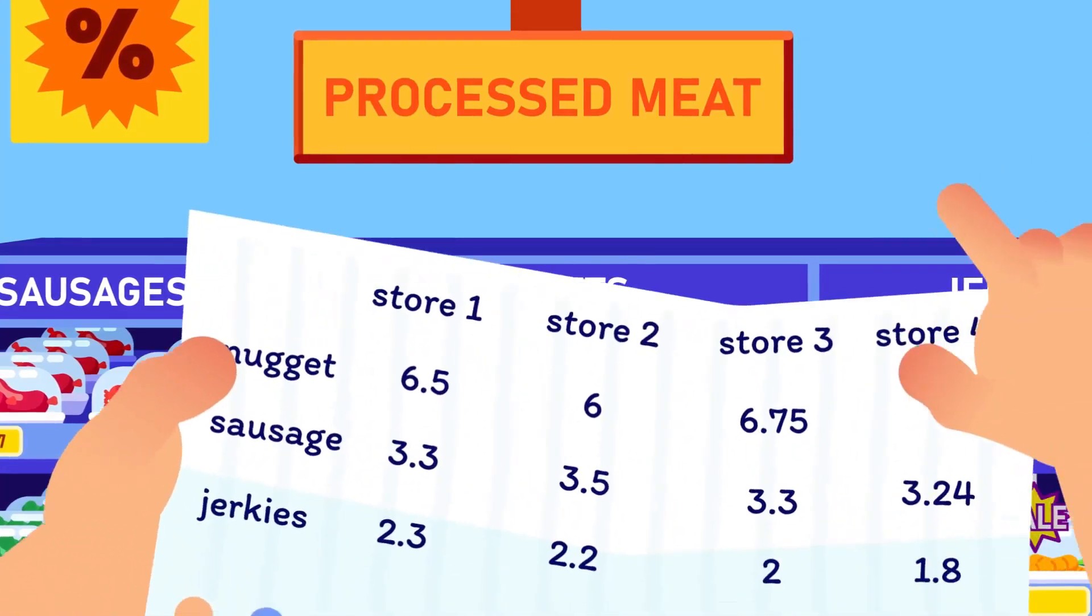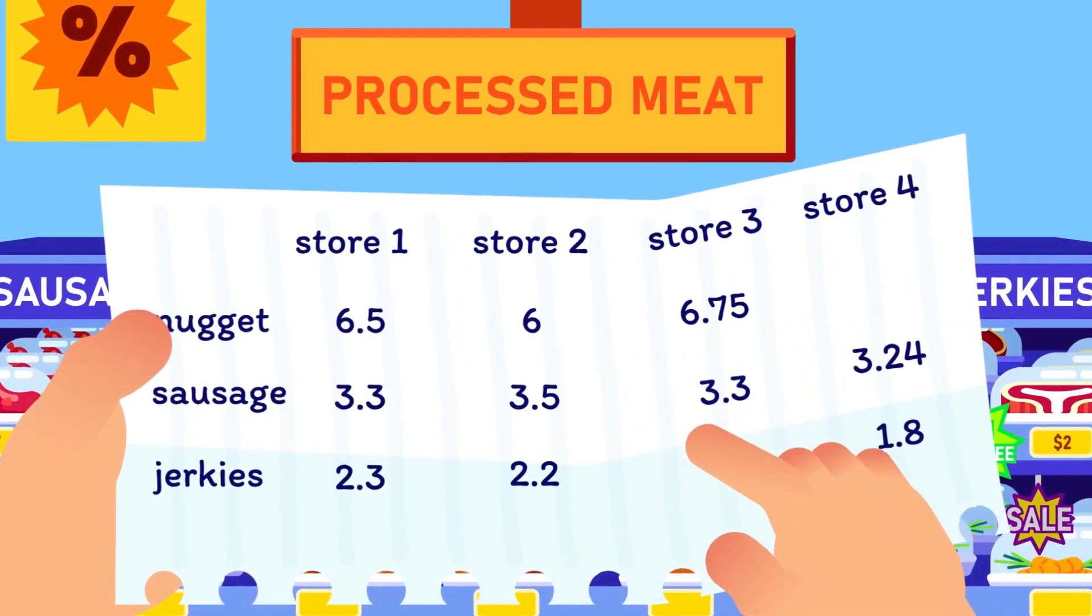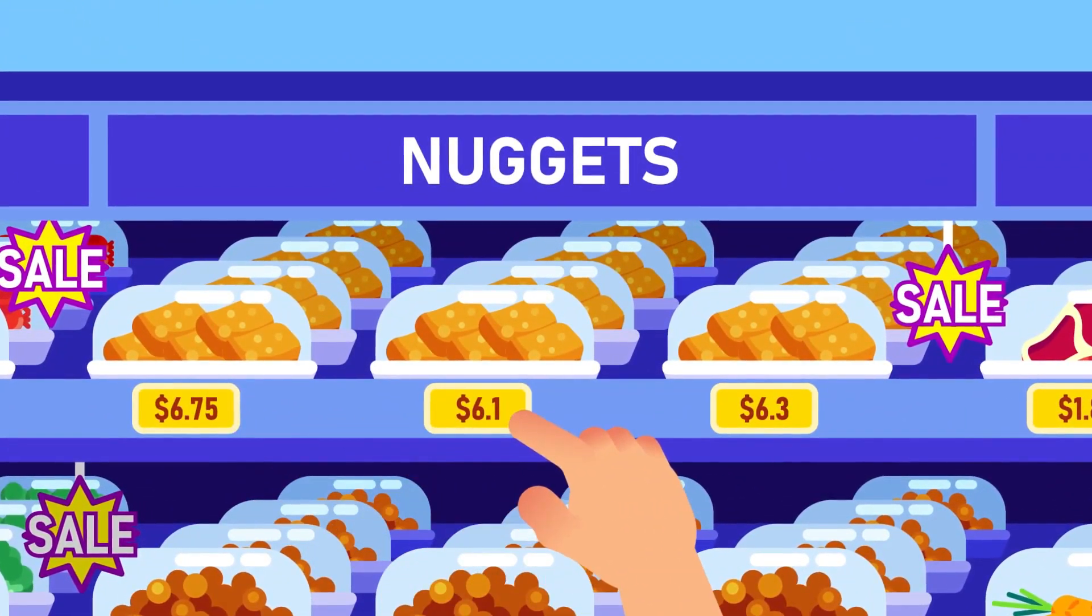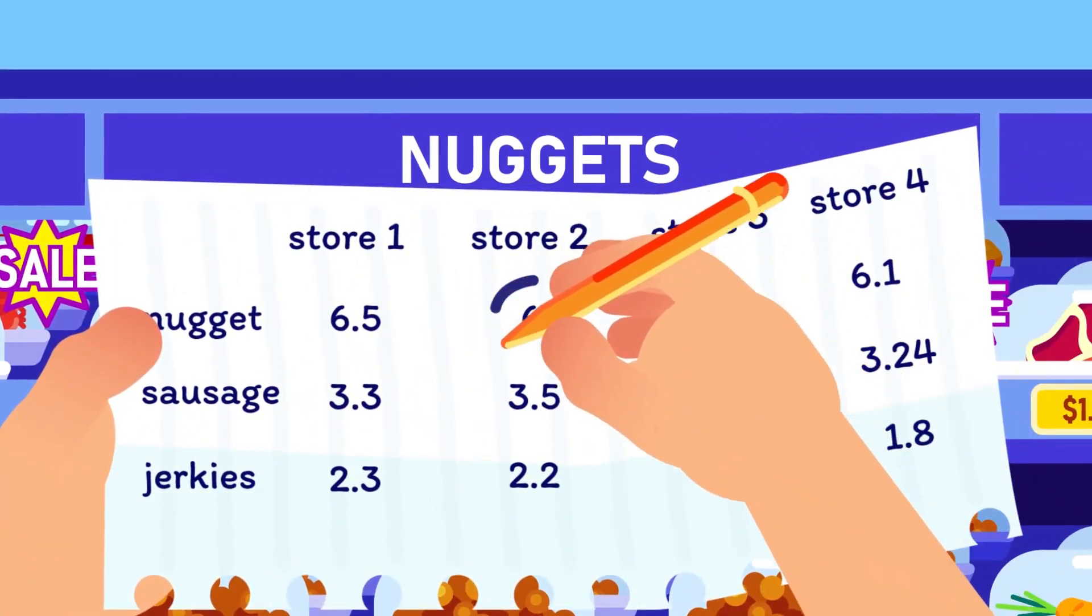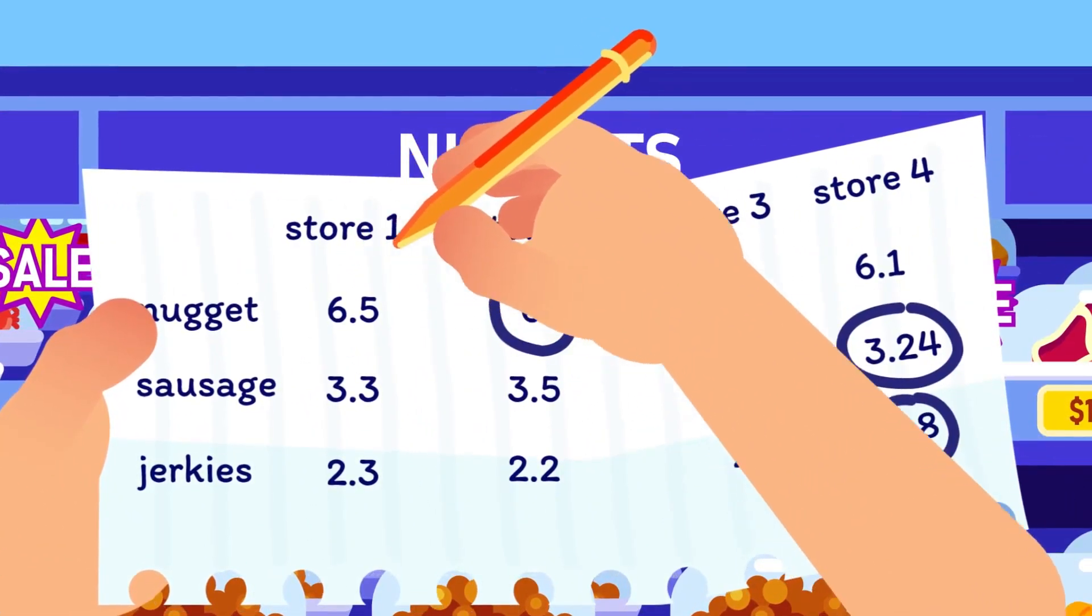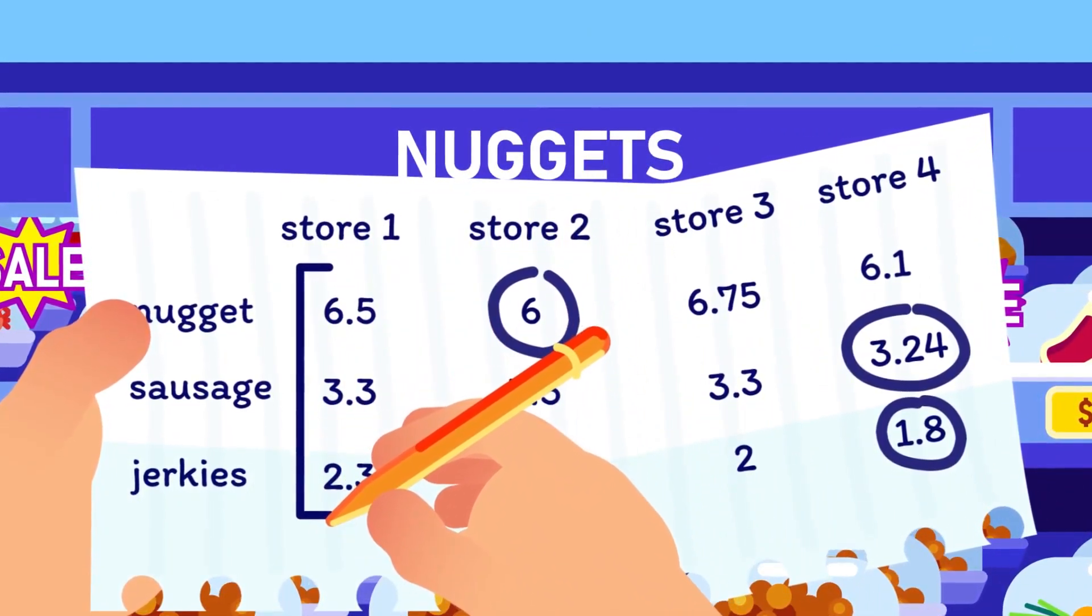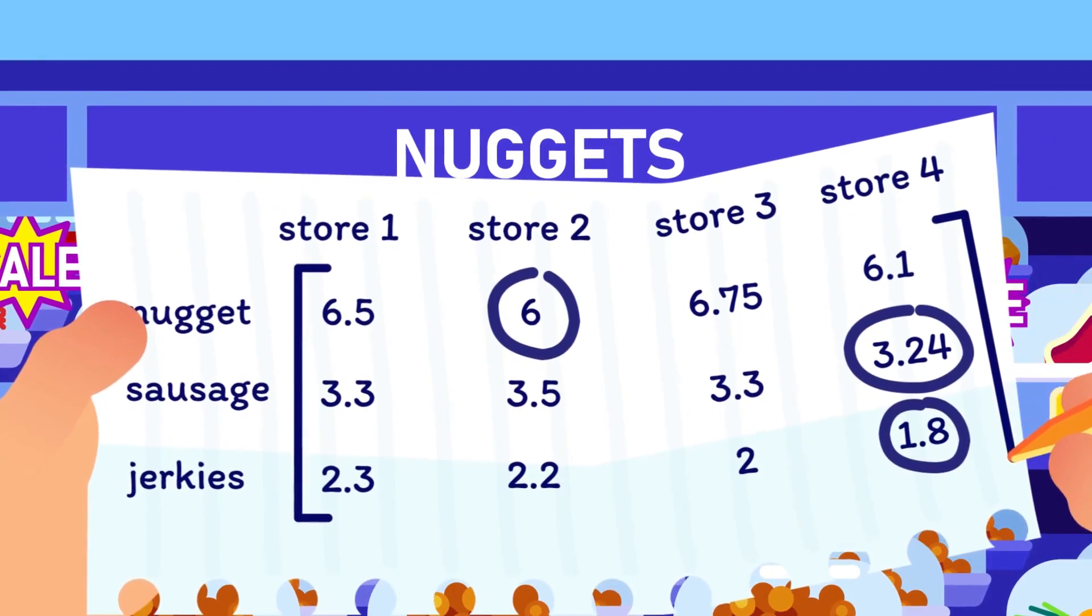Instead, it's a much more basic and nerdy set of lines, but certainly not less interesting and useful. Let's say you suddenly, out of your own goodwill, want to help your mum compare the prices of chicken nuggets, sausages and beef jerky sold in four nearby grocery stores. You can rearrange the price data into a rectangular array and sandwich it with a pair of square brackets.